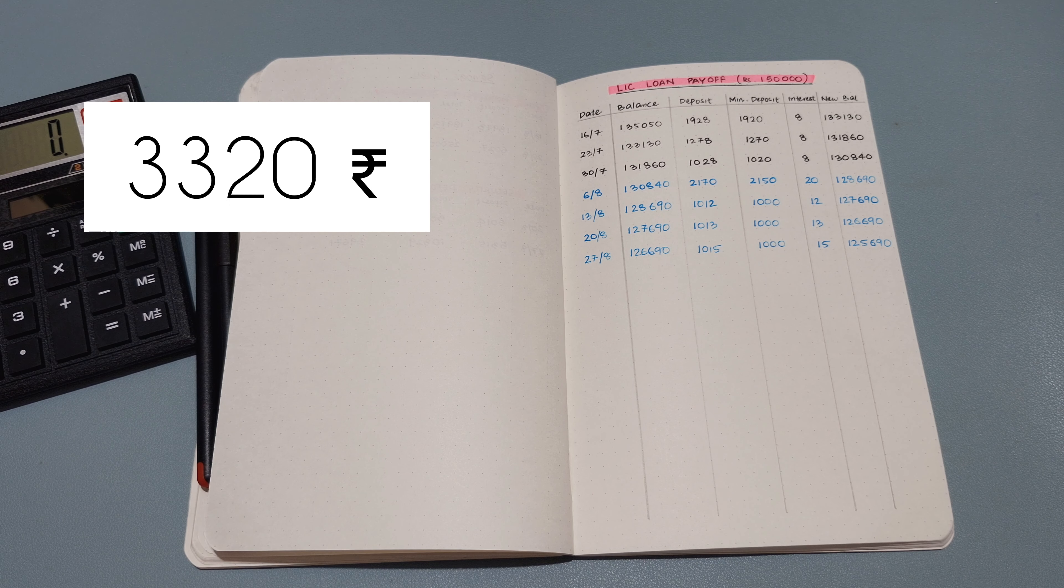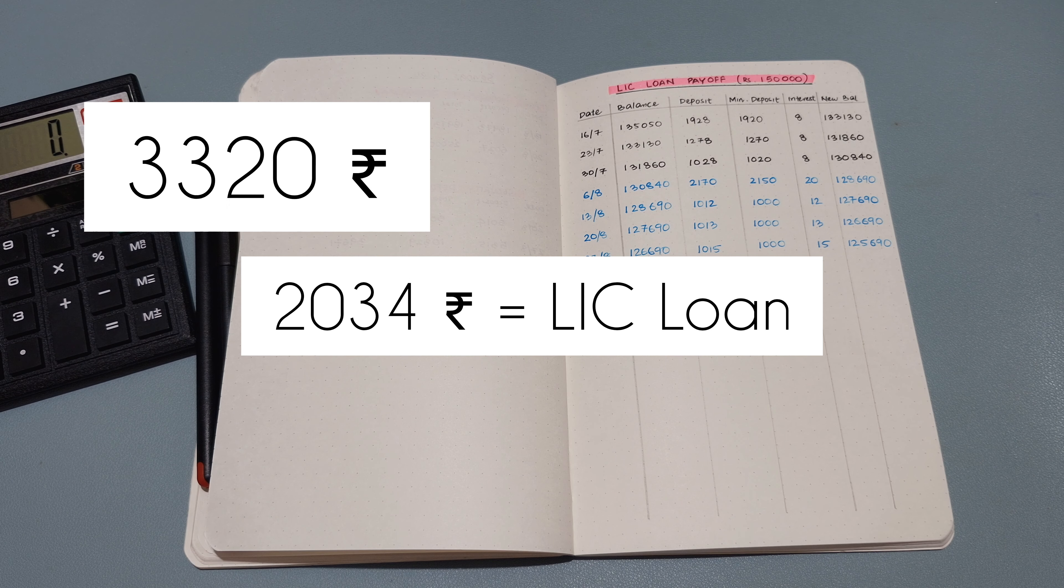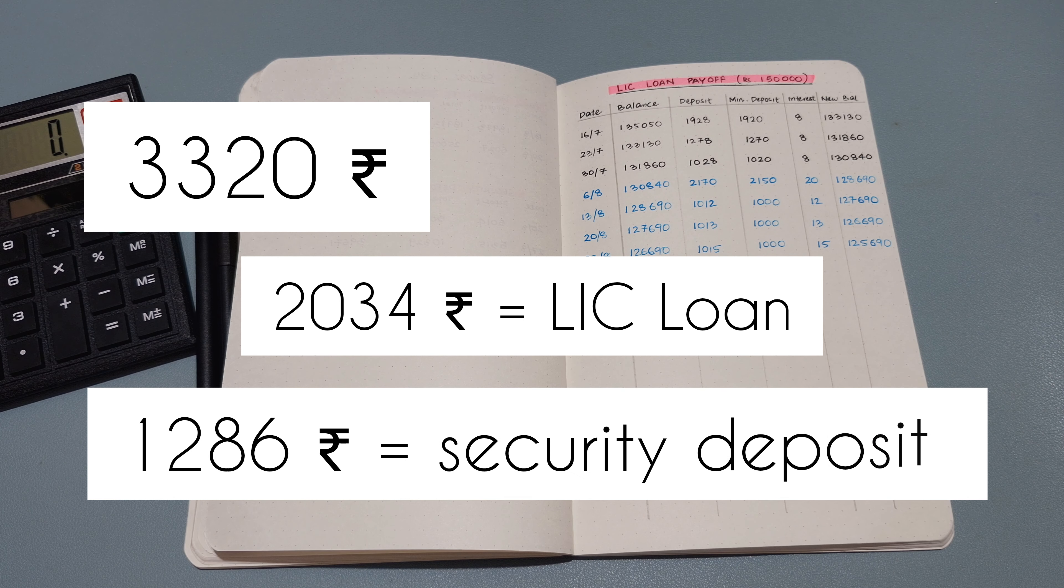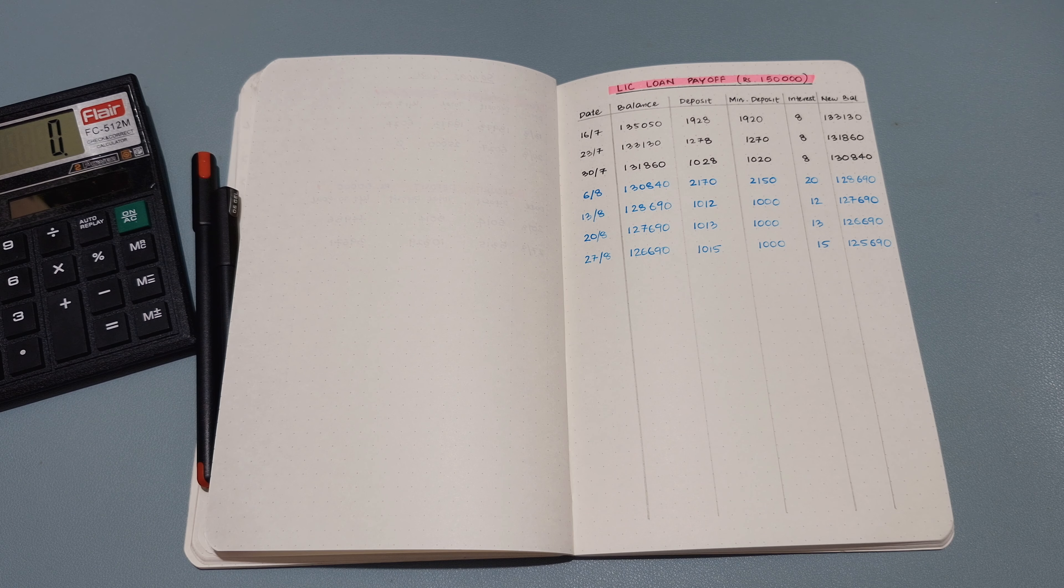The 3,320, out of that I put 2,034 into my LIC loan and then my security deposit got 1,286. So let's get into writing that down.